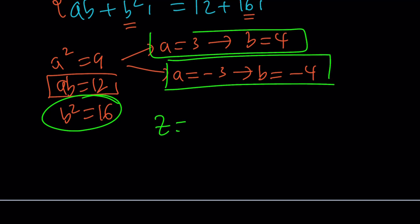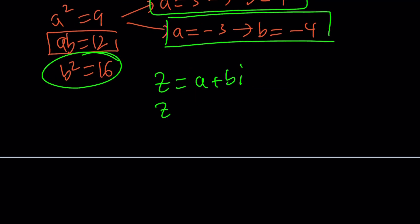Since Z is A plus BI, there are two solutions. Z sub 1, if you want, you can call it that, 3 plus 4i, and Z sub 2 is going to be negative 3 minus 4i. Notice that they are opposites, not conjugates.